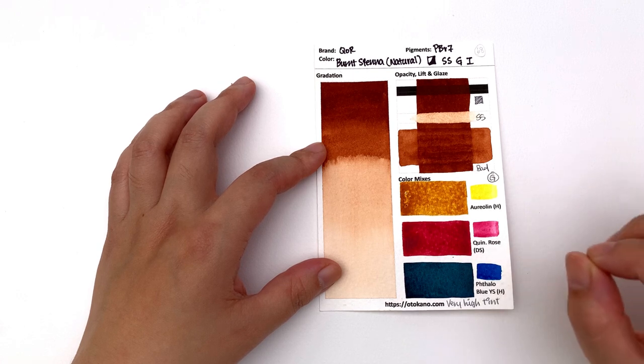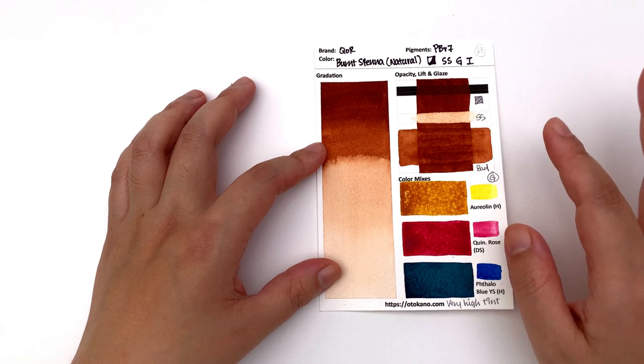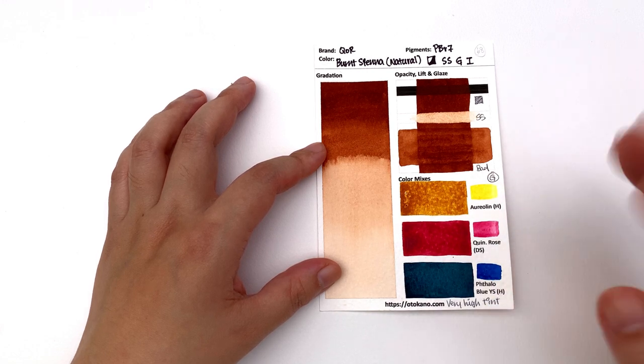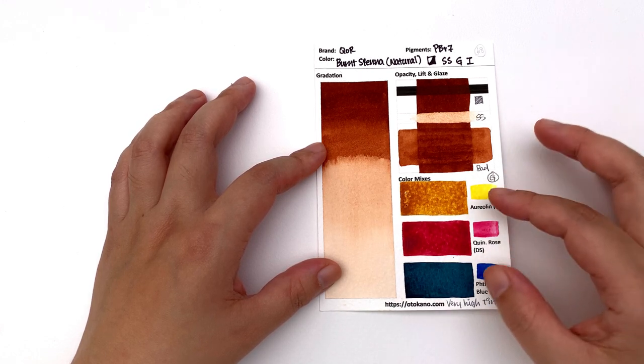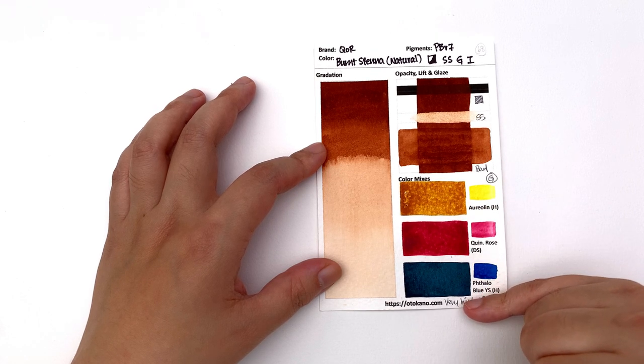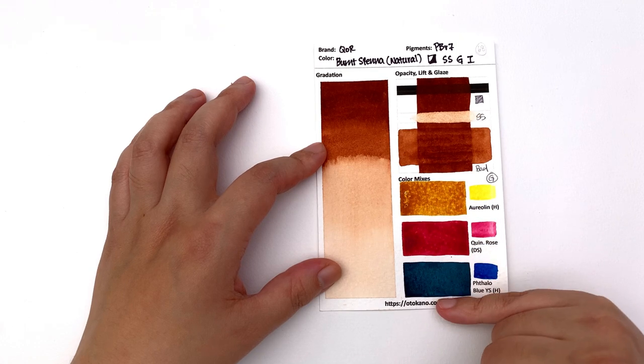It's again very high tinting strengths. This is one thing I noticed with Core, all their natural colors have very high tinting strengths, which is great because then it plays off really well with the very high tinting strengths quins and thalos that they have. So you get these nice strong intense mixes happening with the colors. Lots and lots of texture happening as well.